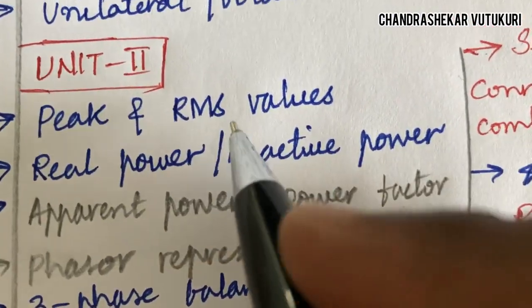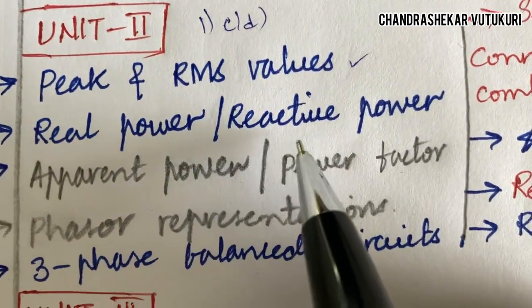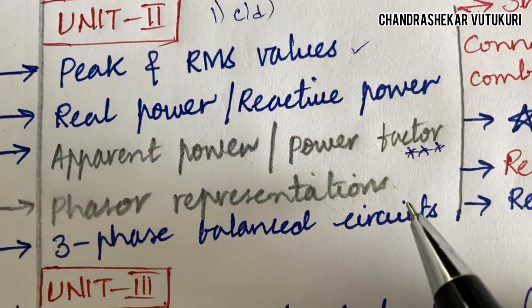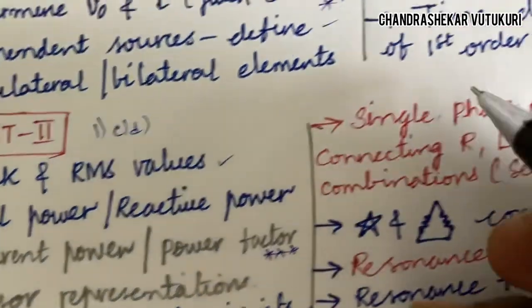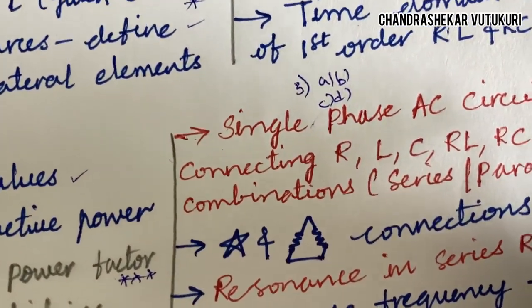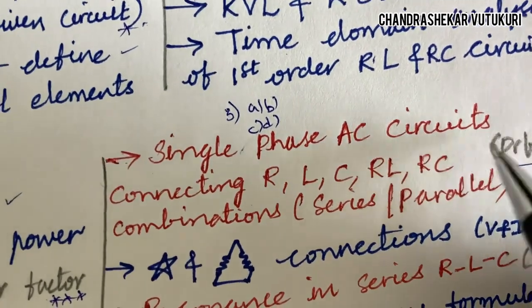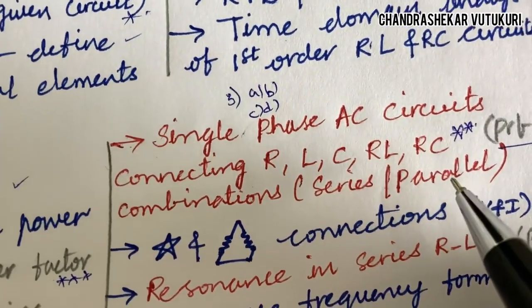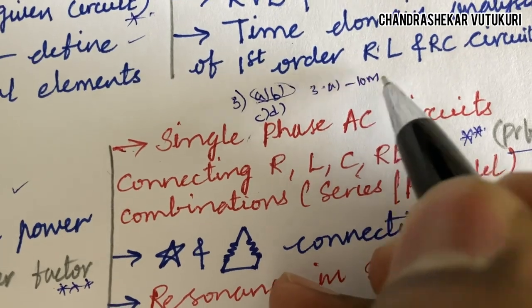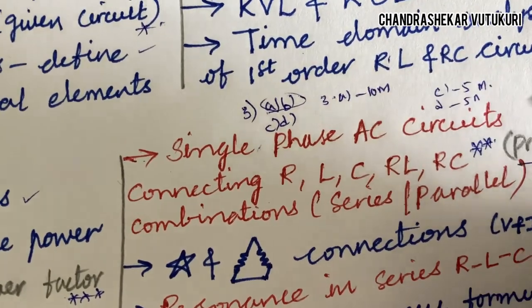Next, I am going to cover question CD in part 1. The peak and RMS values, real power and reactive power, their definitions, apparent power, power factor, phasor representation, and three-phase balanced circuits. I will work out all three equations 3A, B, C, and D. Single-phase AC circuits connecting R, L, C, RL, and RC combinations in series as well as parallel, along with related problems, may be the topmost question. Note that sometimes it won't be an AB combination — sometimes it is just 3A for 10 marks, or two questions of 5 marks each.